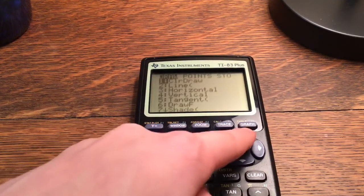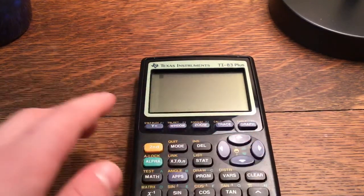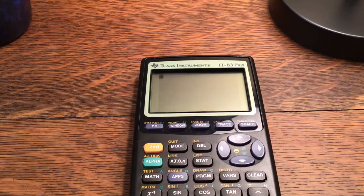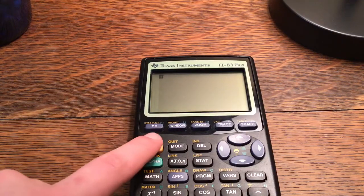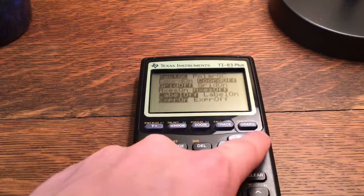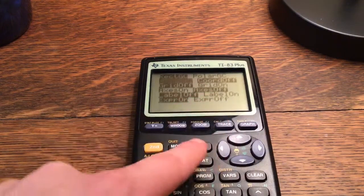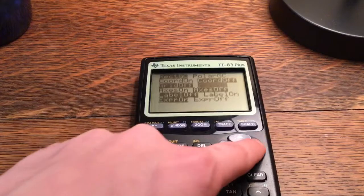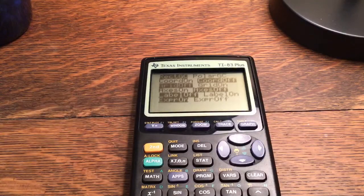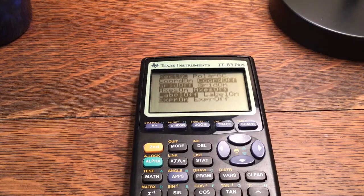So second draw, or actually, I showed this on the first video. Before you draw, you're going to want to go to second format. Make sure your coordinates are off and your axes are off. You can turn grid off if you want. I personally don't.